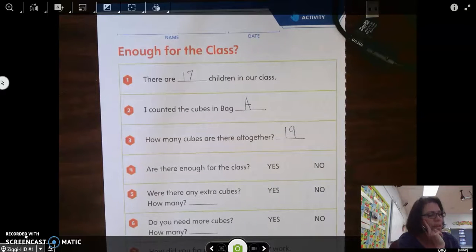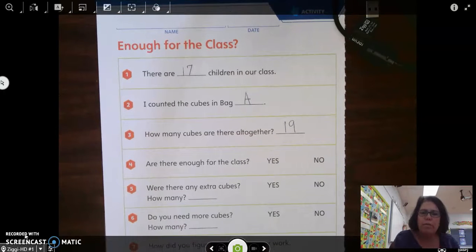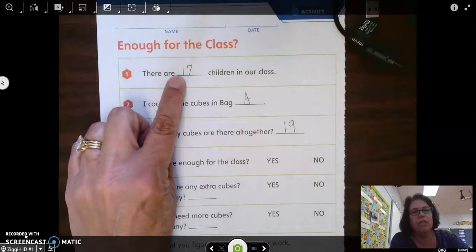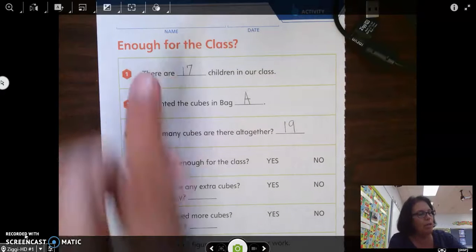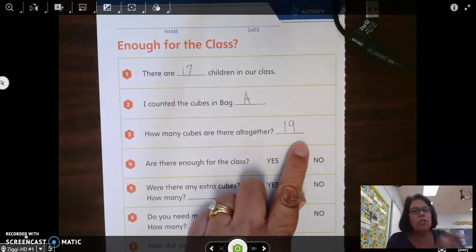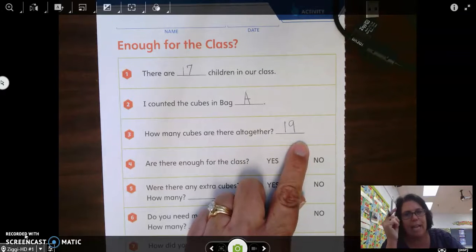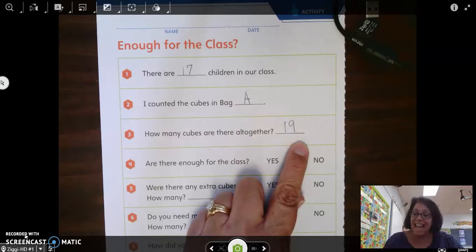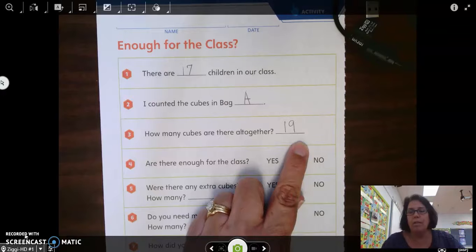Question number four says, are there enough for the class? Well, we know that there are 17 children in our class and we know that there are 19 cubes. So you first have to ask yourself, is 19 more or is 19 less than 17? I hope you're thinking more. That's one of our sight words this week, more.